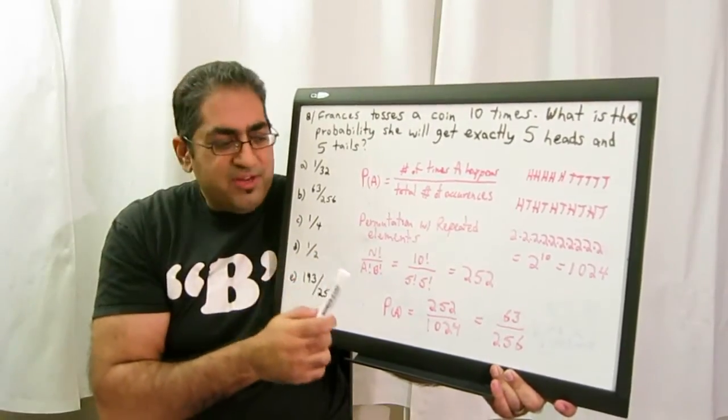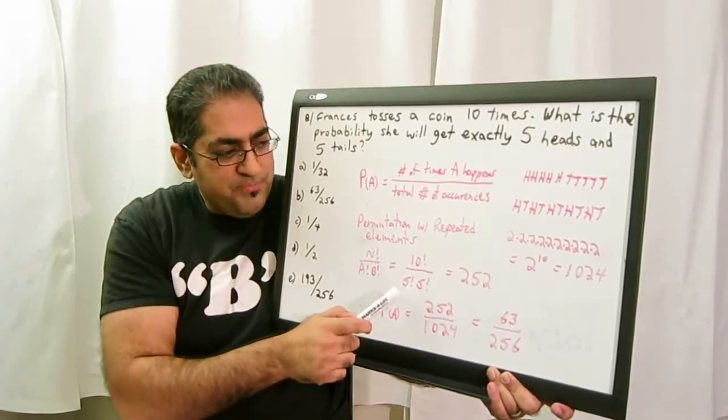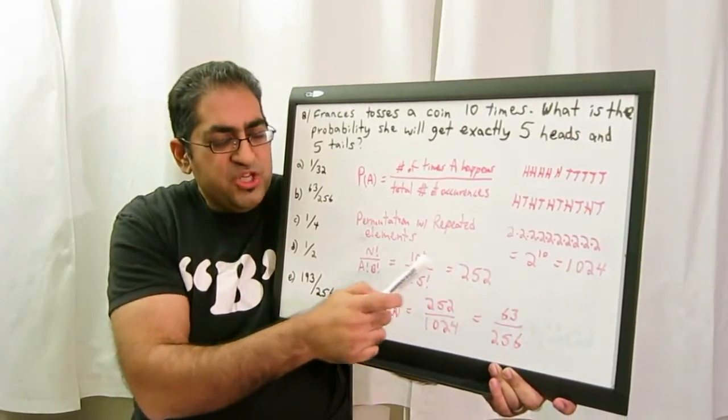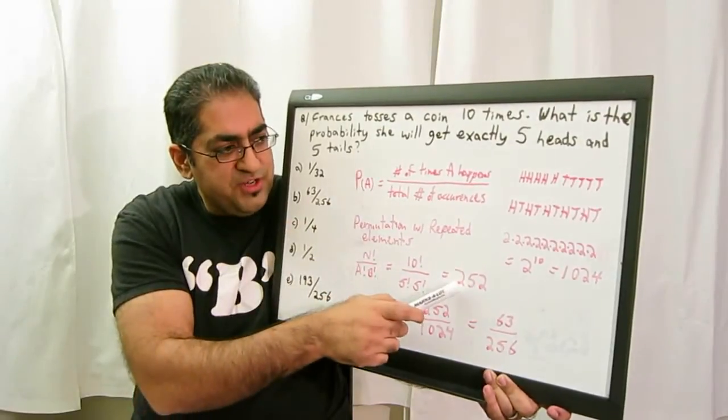Since heads and tails repeat five times each, we get 10 factorial over 5 factorial times 5 factorial. And when you calculate that, you get 252. So the total number of times A happens is 252.